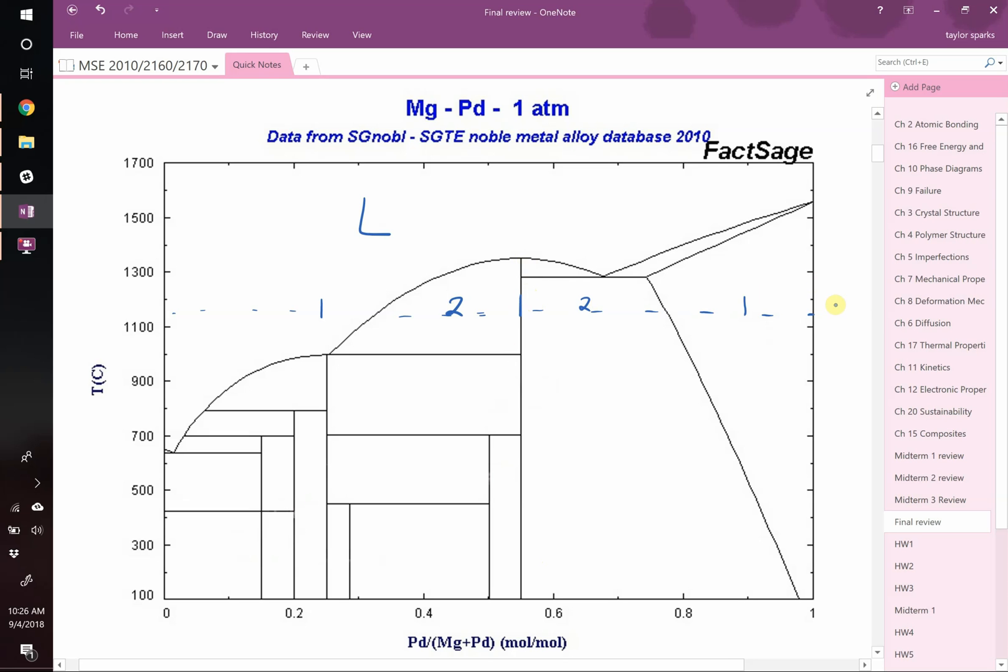And that makes sense. This compound over here, pure palladium, is going to be single phase, and then it has a region of solid solubility over here where it has up to, looks like, over 20% of the atoms can be replaced with magnesium before it reaches that second phase region.